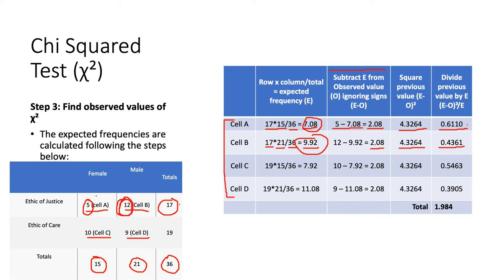Cell C, same thing. 19, we've got from the total number of Ethic of Care. And 15, we've got from the total number of females. So, 19 times 15 divided by total number of participants gives us 7.92. Minus 7.92 from our observed value in cell C, which is 10. That gives us 2.08. Square it and then divide it by the expected frequency value, 7.92, to get this result.